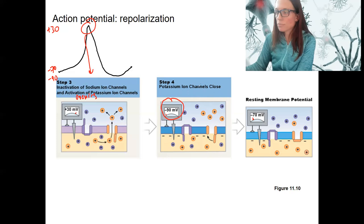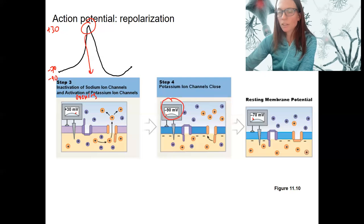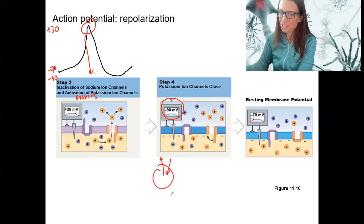That's when those potassium channels close, undershooting rest. Actually, minus 90, that's potassium's equilibrium potential. So it's kind of going down until there's no longer a drive. The two electrical and chemical gradients are equal and opposite.